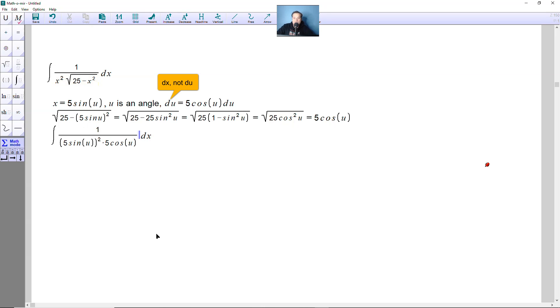And the dx part from above there can be replaced with the following. This is dx over here, not du. So dx, 5 cosine u du is what you're going to put in for dx down below. So it's going to be here 5 cosine u du.